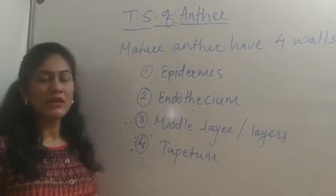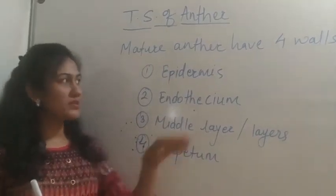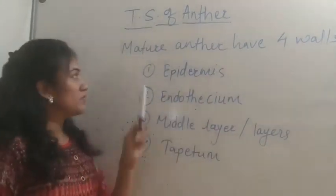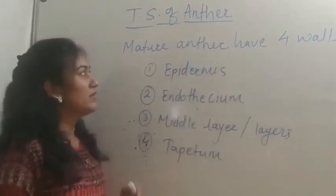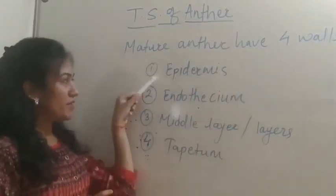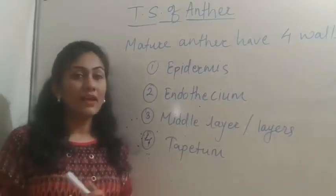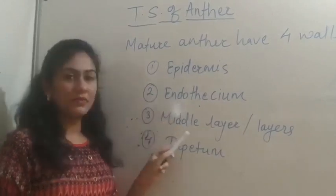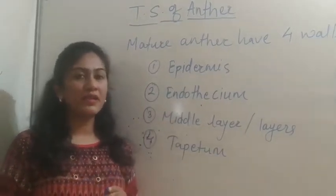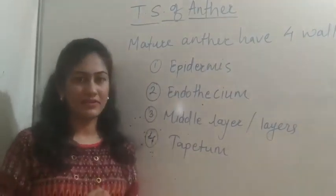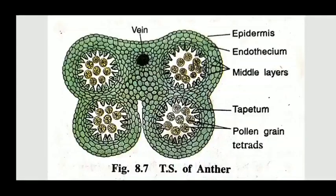Mature anther having four walls. You have to write this answer in two parts: first is walls of the anther and the second one is structure of pollen. So first is mature anther or the walls of the anther. Mature anther having four walls. What is the meaning of TS? Transverse section of anther.